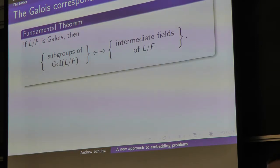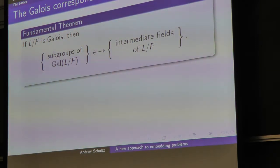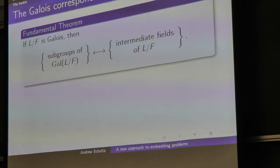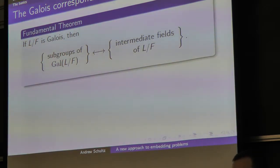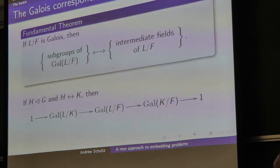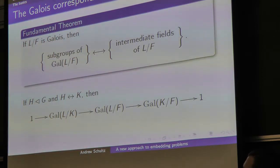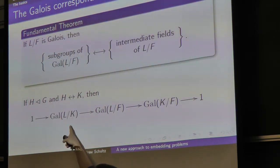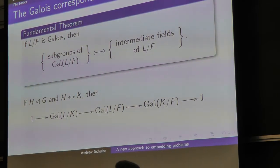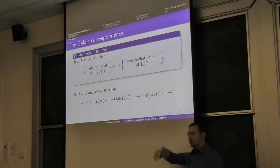The big theorem in Galois theory says that when you have a Galois extension, you can enumerate the intermediate fields by just looking at the subgroups of the Galois group. Field extensions usually have infinitely many elements, but your Galois group is typically a nice finite thing. If you have a normal subgroup, the field K associated to it gives a short exact sequence where the Galois group of K sits inside the big Galois group and the quotient gives the base extension.